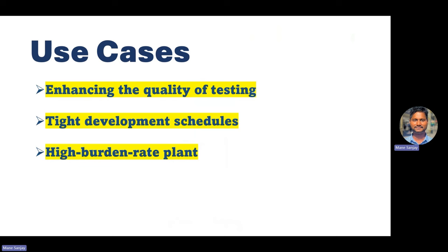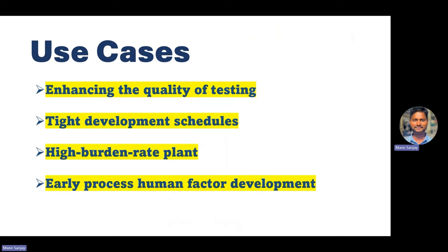The next area is high burden rate plant. In many cases, the plant is more expensive than a high-fidelity real-time simulator and therefore has a higher burden rate. It is more economical to develop and test while connected to a HIL simulator than the real plant. For jet engine manufacturers, HIL simulation is a fundamental part of engine development — it saves cost, duration, and helps with safety. The last area is early process human factor development. HIL simulation is a key step in developing human factors, ensuring usability and system consistency using software ergonomics, human factors research, and design. These are the four major areas defining the use cases of HIL.